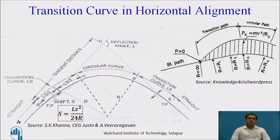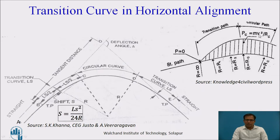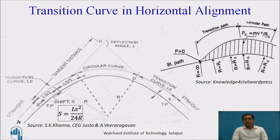Let us understand the function of transition curves in horizontal alignment. A transition curve has a varying radius. At the straight path, the radius is infinity, and the centrifugal force P equals 0, because P = MV²/RC. If R is infinity, automatically P is 0. From there onwards, the radius starts decreasing, and we get values R1, R2, and RC at the start of the circular curve, where we get the full design radius. As R decreases, the centrifugal force increases and becomes constant at the circular curve.